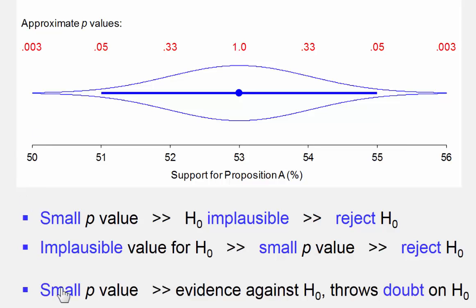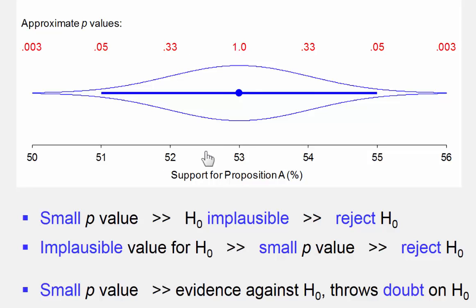To put it slightly differently again, a small p-value of 0.003 is evidence against 50 being a reasonable null hypothesis value. It throws doubt on the null hypothesis, and the smaller the p-value, the stronger the doubt on a null hypothesis. So the signal from a p-value — what a p-value indicates to us — and what the cat's eye and the confidence interval tell us, hang together as we would hope and expect. This is the basis for understanding how the two relate, and the basis for some guidelines, some rules of thumb, that allow us to translate backwards and forwards between confidence intervals and p-values.